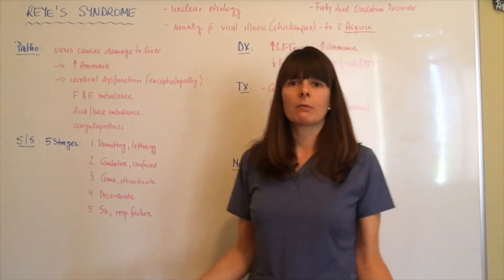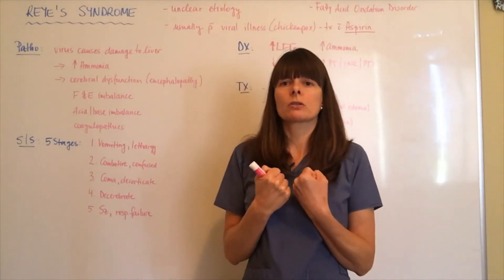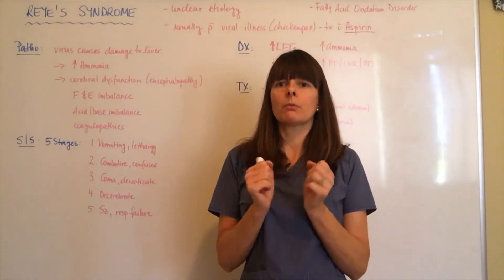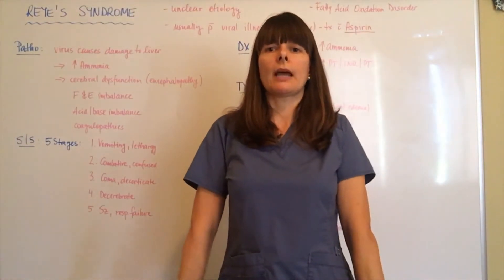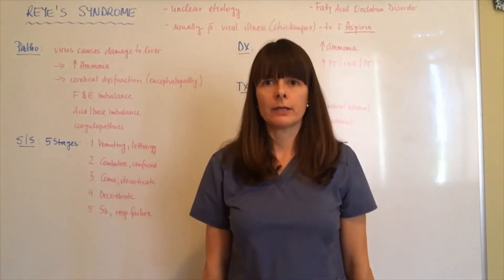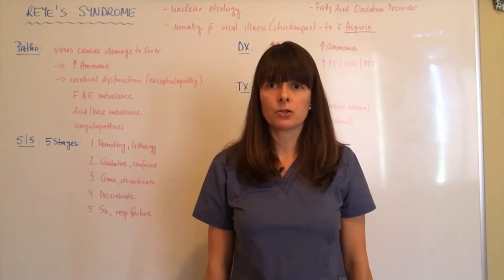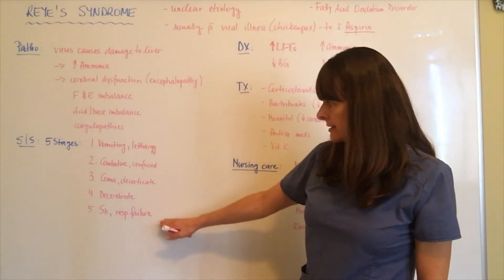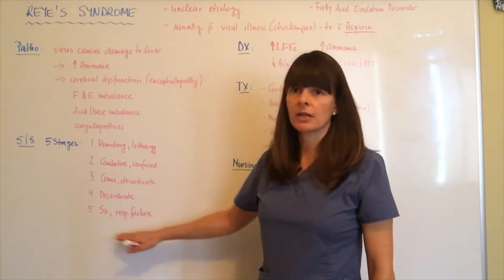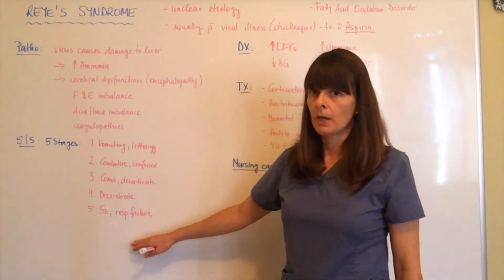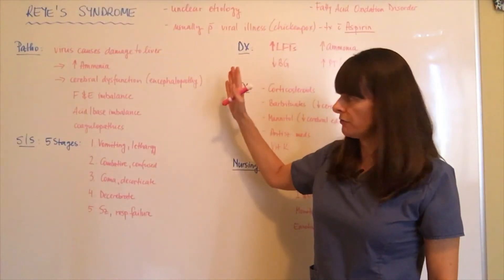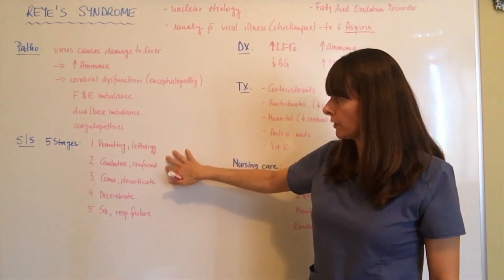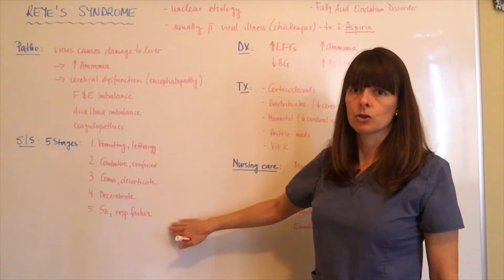In decorticate posturing, everything is going to go to the core, so the patient's arms will be flexed as well as their hands. In decerebrate posturing, the arms will be pointing away with the fists pointing away — that is usually a very late sign and pretty much a sign of imminent death. In the last stage, the patient will develop seizures, eventually leading to respiratory failure. This very mild viral infection leading to liver damage and encephalopathy can very quickly escalate to death.